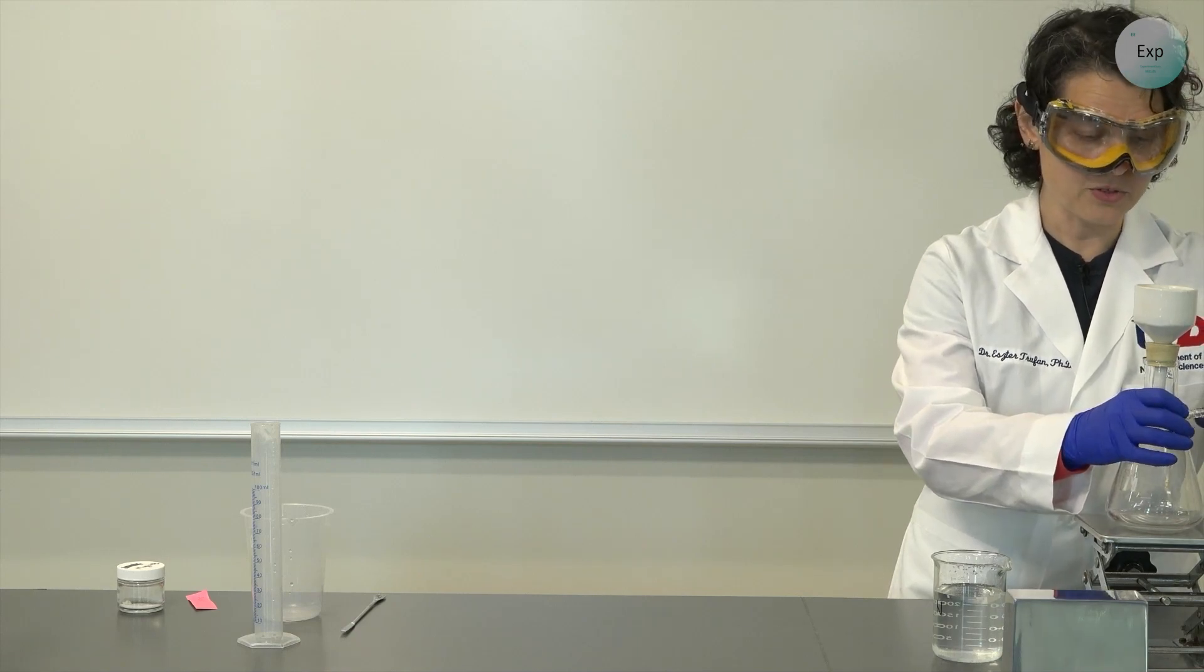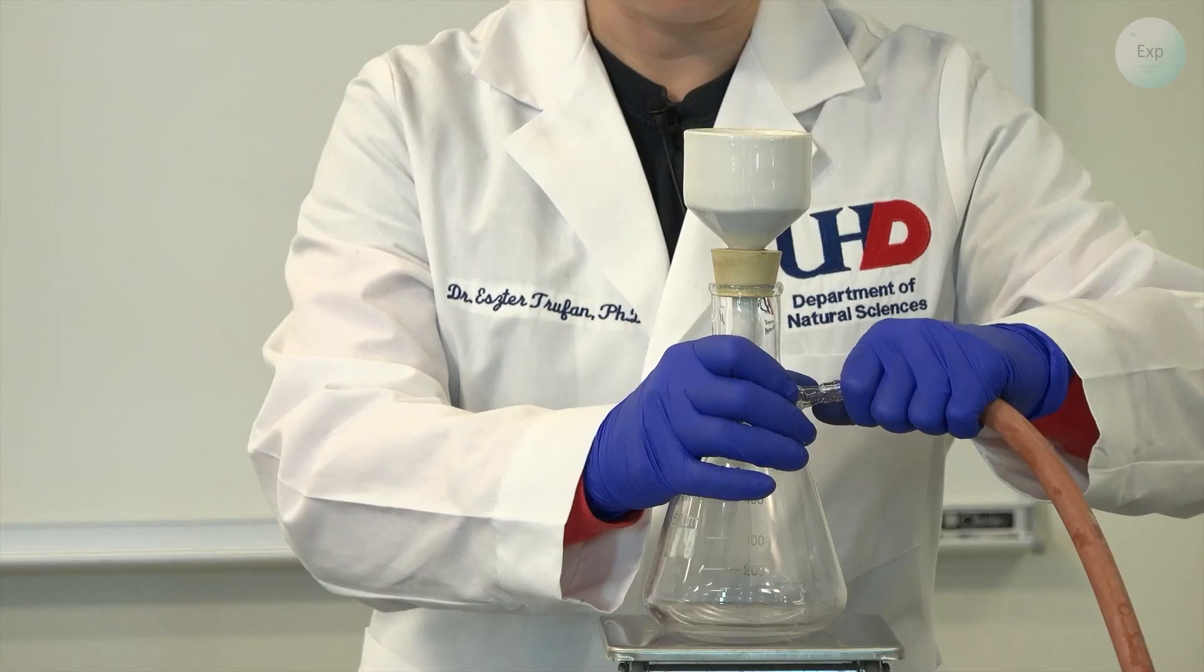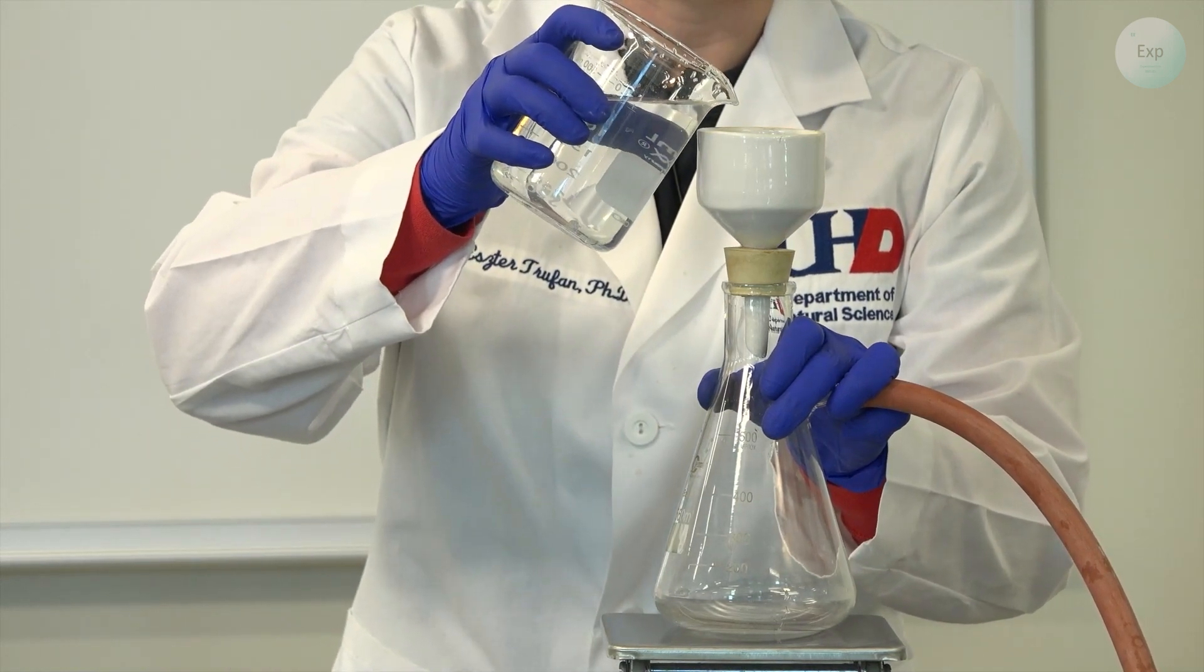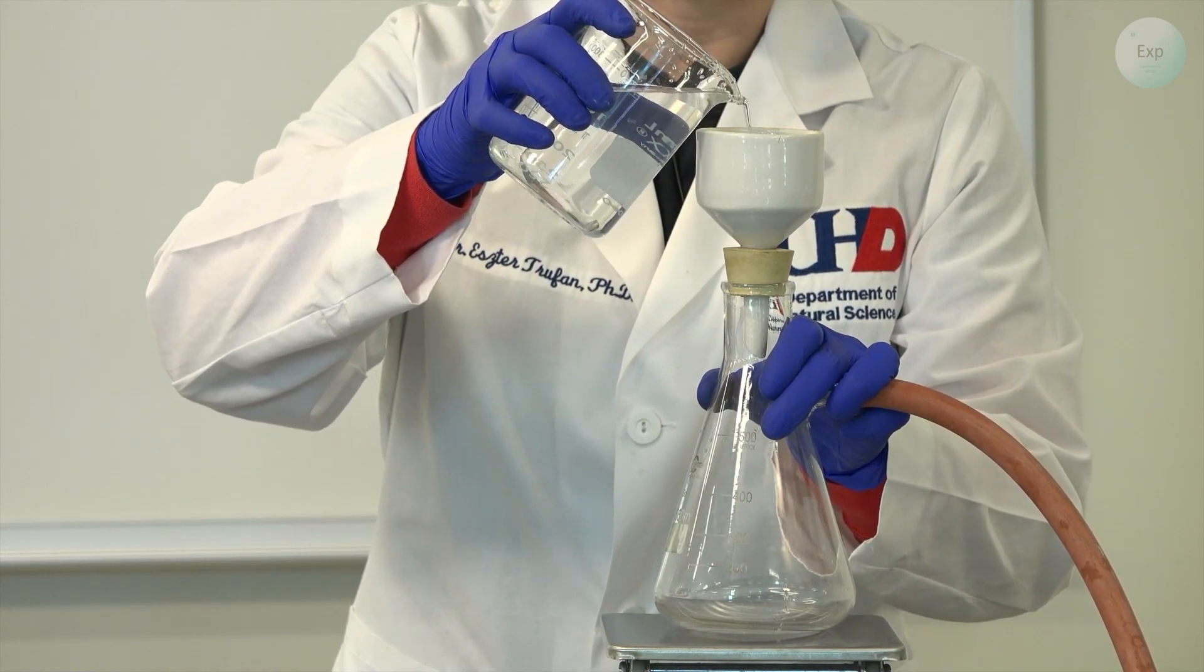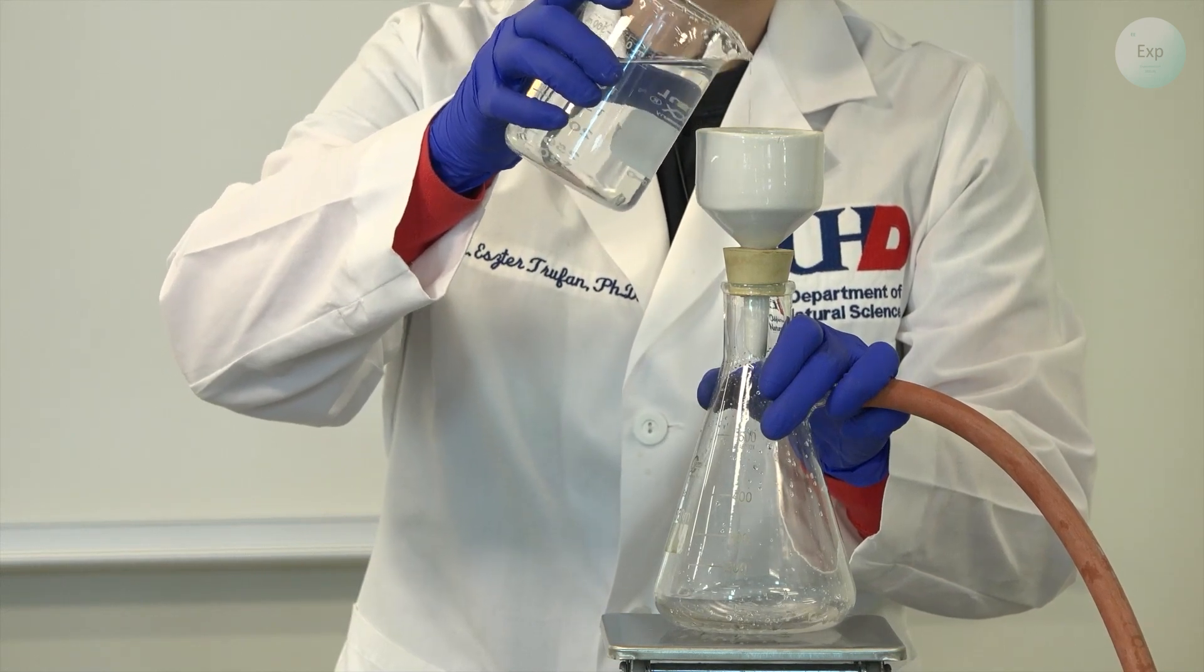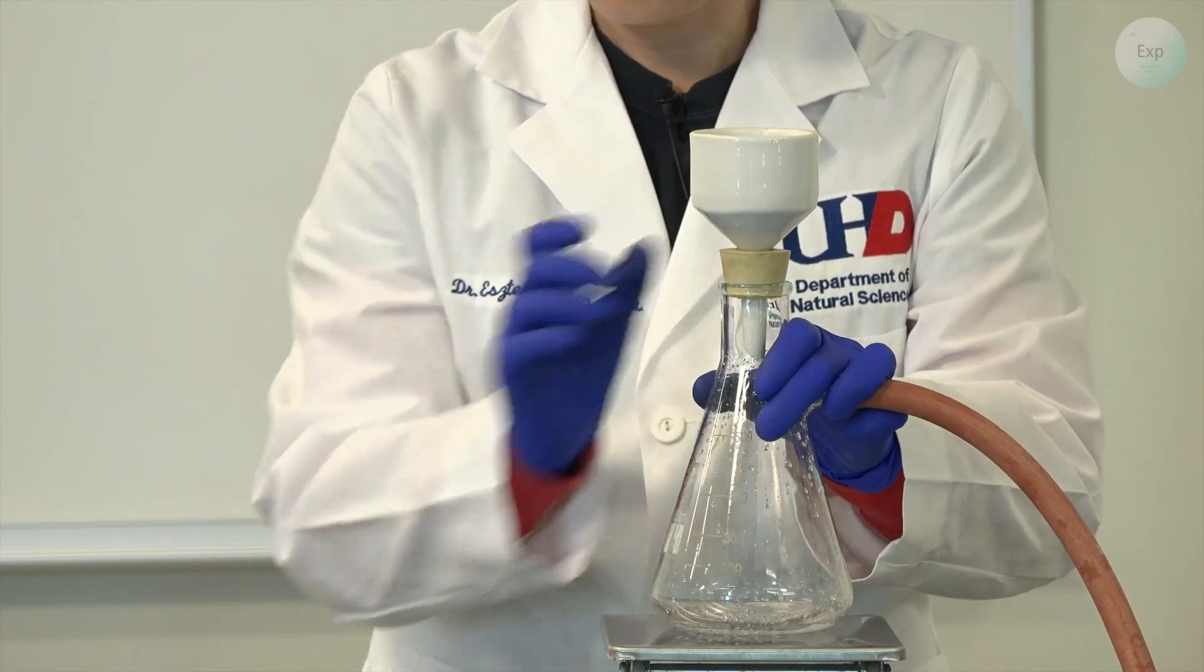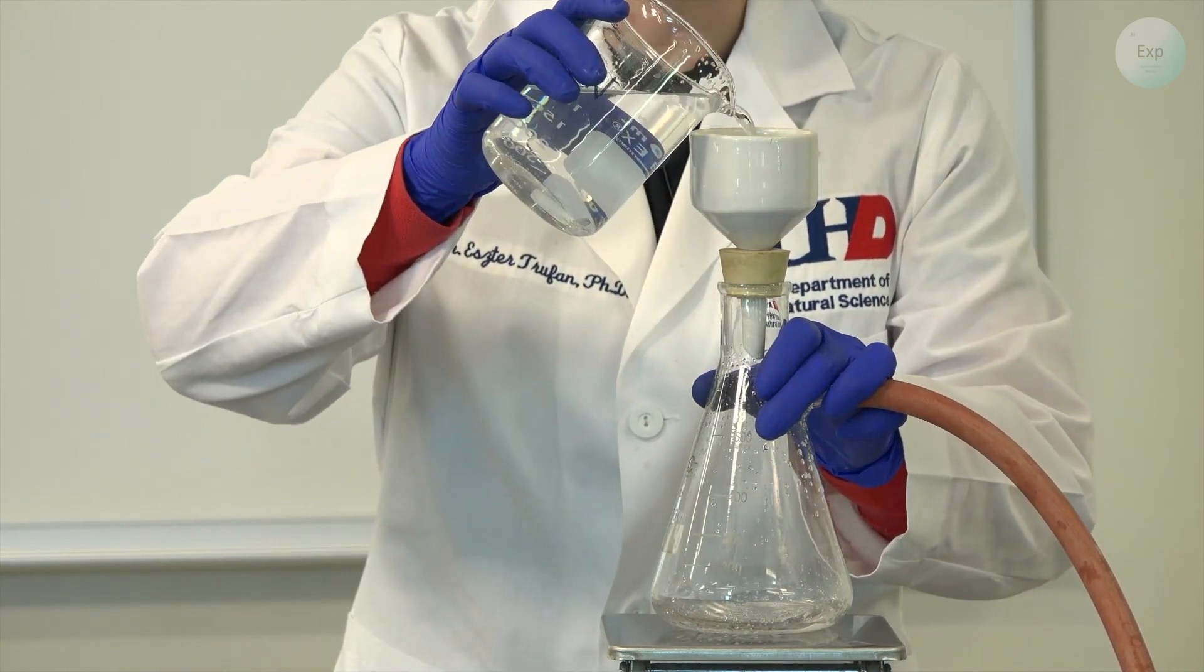Connect the rubber hose to my vacuum flask and then add just a small amount of solution on the paper. That should cause the paper to stick to the funnel and then I will start pouring the rest of the solution.